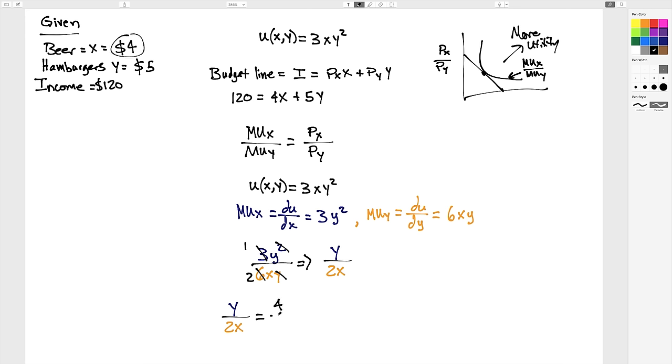Divided by price of Y, $5. Then we cross-multiply those and say that 5Y equals 8X. Rearrange that so Y equals 8 fifths X.